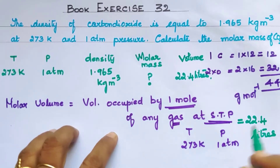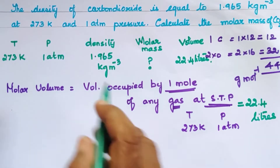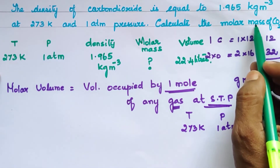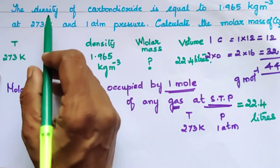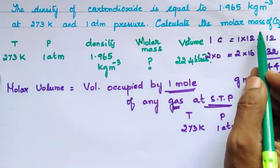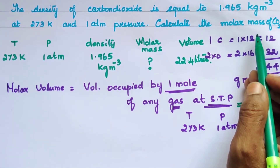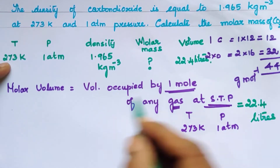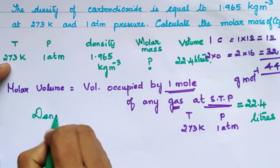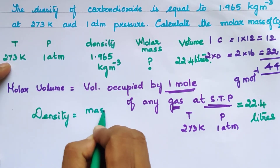Now we use the given data. What is the density? What is the mass? Density is related to mass. The formula — you can see it from 7th standard — density is equal to mass divided by volume.